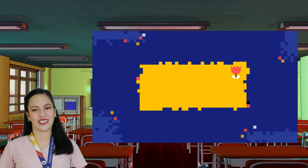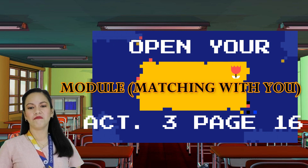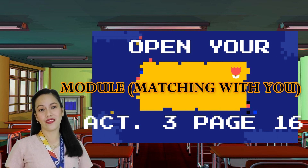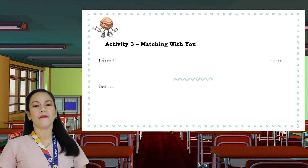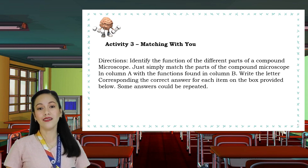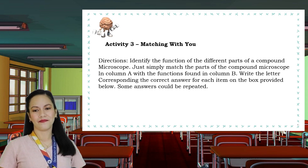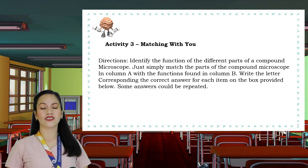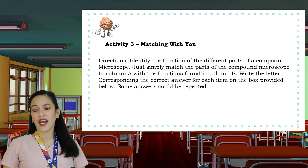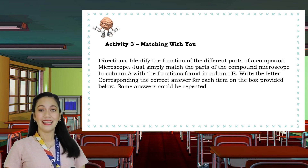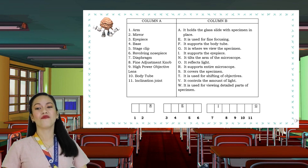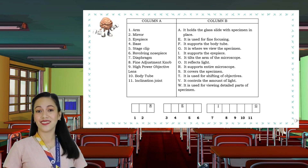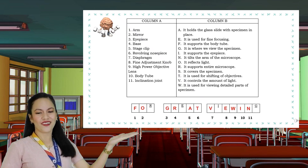Let's have another activity. Turn your Quarter 2, Module 1 to page 16, Activity 3: Matching With You. In this activity, you will identify the function of the different parts of the compound microscope by matching the parts in Column A with the functions in Column B. Write the letter of the correct answer on the box provided to form mystery words in the pattern. Note that some answers could be repeated. Did you find the answers correctly? The statement formed is: 'It's for great viewing.'